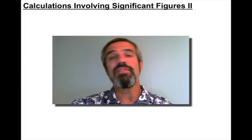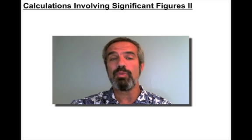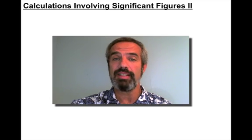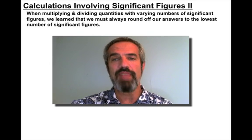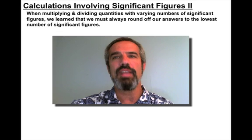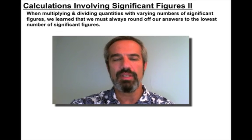Okay, you just saw calculations involving significant figures 1, in which we covered the rules for multiplying and dividing. Let's go over those. When multiplying and dividing quantities with varying number of significant figures, we learned that we must always round off the answers to the lowest number of significant figures.